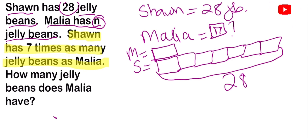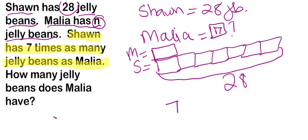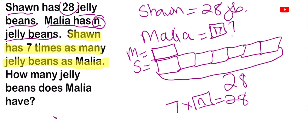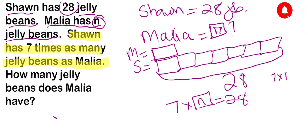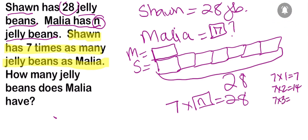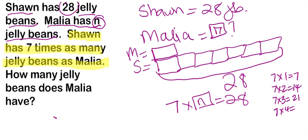I need to figure out how to equally divide 28 into seven boxes. I can use my times table because it goes fast. I can say: seven times n equals 28, where n represents how many Malia has. Seven times one is 7, seven times two is 14, seven times three is 21, seven times four is 28 — I found my number!